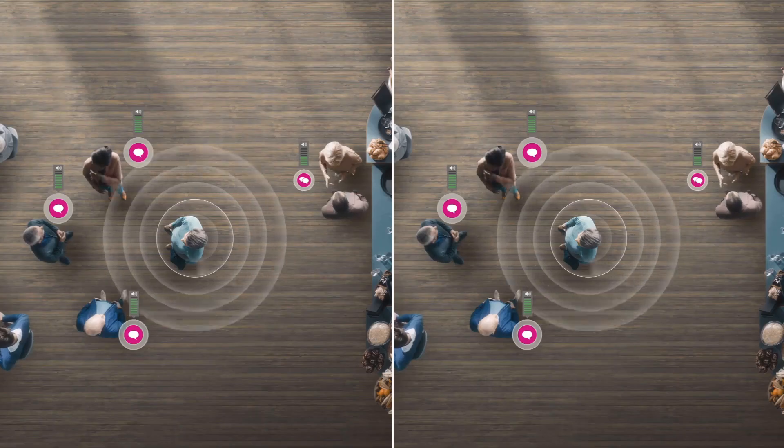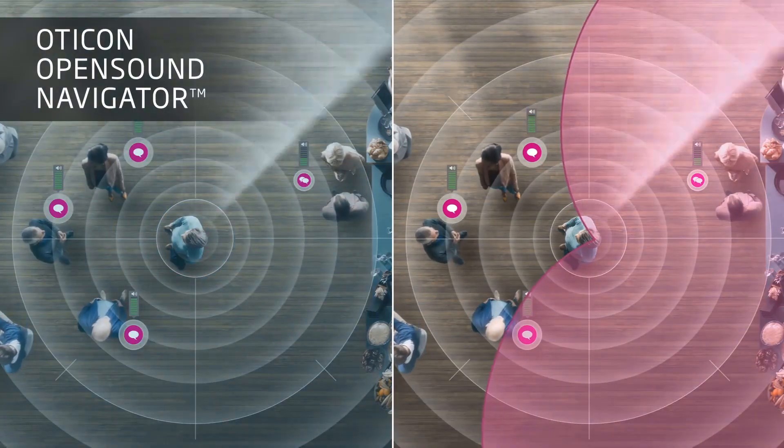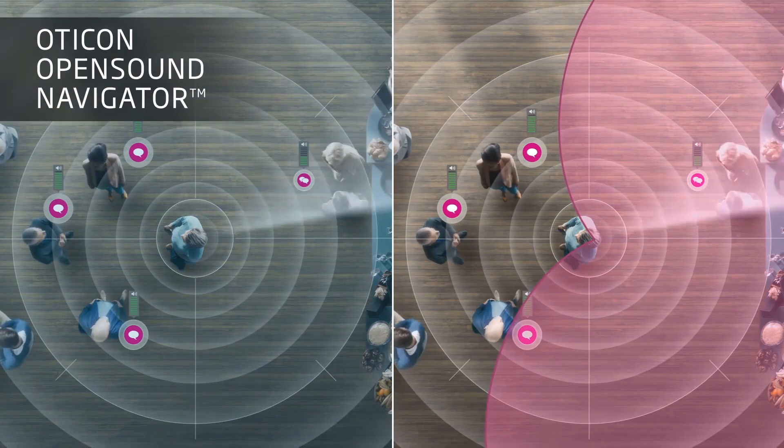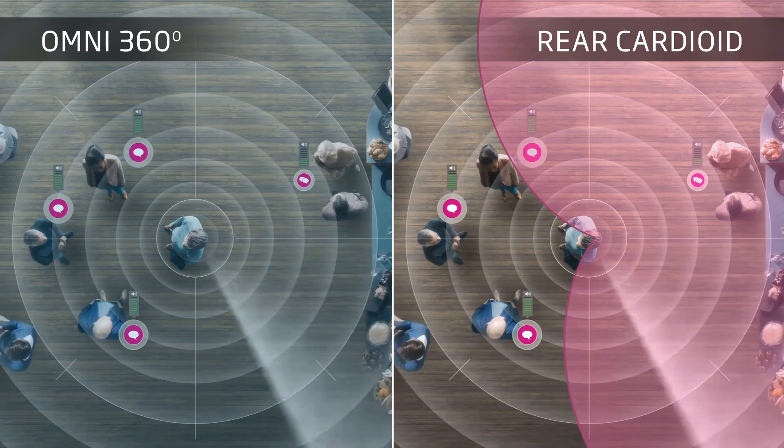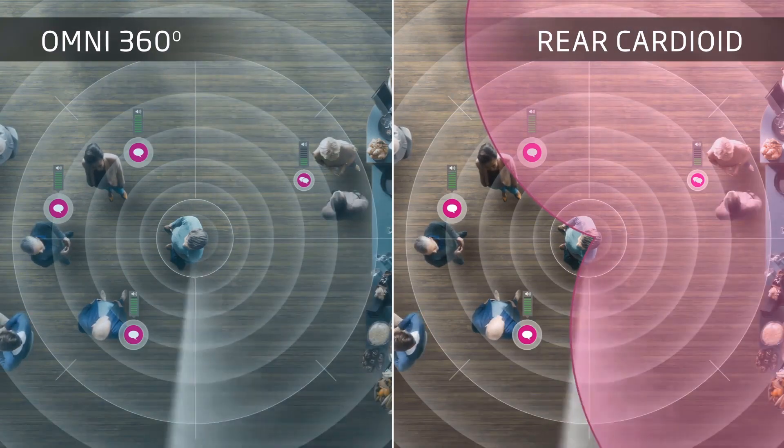To create an improved listening experience, Oticon's Open Sound Navigator monitors two sound fields simultaneously, a 360-degree panorama of the environment and a rear cardioid response field.